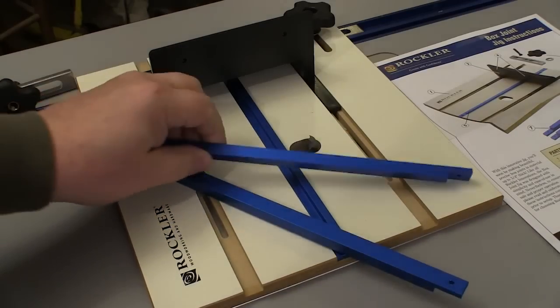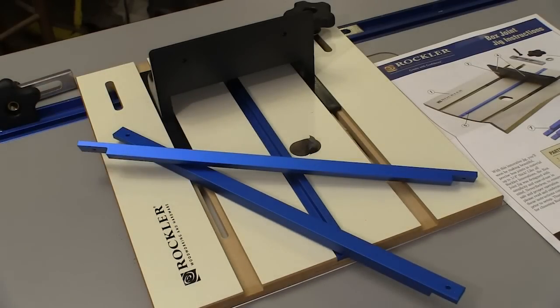Rockler Router Table Box Joint Jig really does come with everything you need except for the router bit itself and the wood you're going to cut.